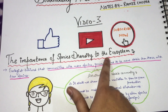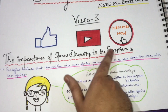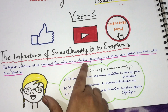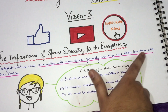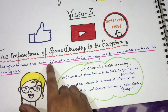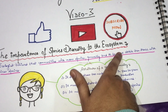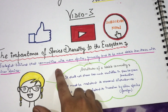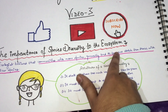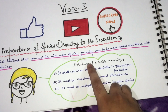The importance of species diversity to the ecosystem. Ecologists believe that communities with more species generally tend to be more stable than those with fewer species.